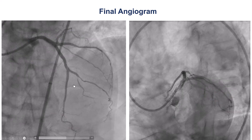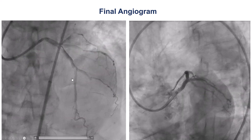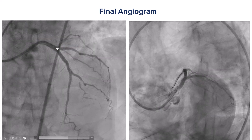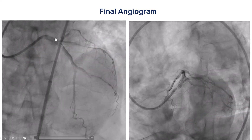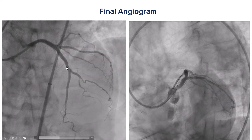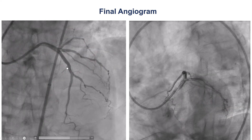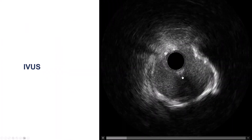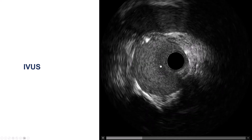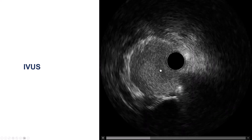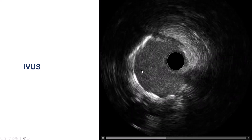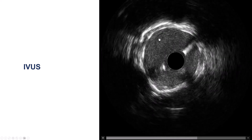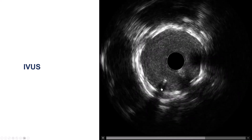This was the final result. Essentially two DK crushes were done — one in the middle LAD-diagonal and the other in the distal left main. Nice result with TIMI 3 flow in the diagonal, TIMI 3 flow in the circumflex, and TIMI 3 flow in the LAD. Intravascular ultrasound confirmed the stent was well expanded and well apposed to the wall of the vessel — overall a satisfactory result.